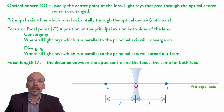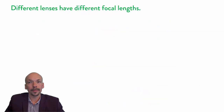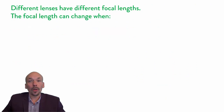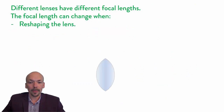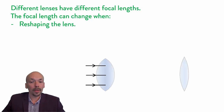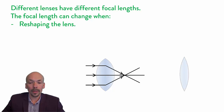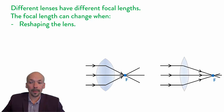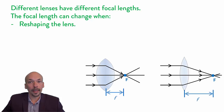Between different lenses, these focal lengths can differ. So different lenses have different focal lengths. The focal length can be changed when we reshape the lens. Here we have a thick lens and here we have a thinner lens, and if we use parallel light rays we can determine the focal length. As you can see, the focal length is different — here the focal length is far shorter than on the thicker lens. This has to do with the shape of the lens.